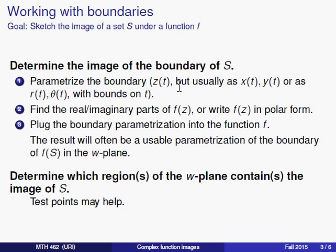We'll do that by parameterizing the boundary. We'll find the real and imaginary parts of our function f. And we're going to plug the boundary parameterization into the function f. The result will often be a usable parameterization of the boundary of f(S) in the w-plane. And then we'll decide which region of the w plane contains the image of S.